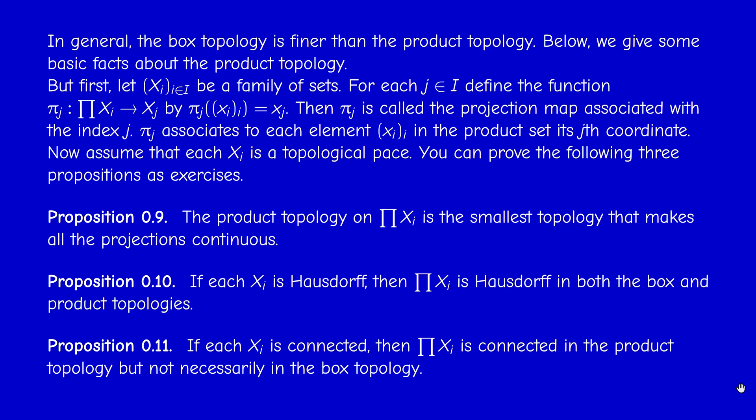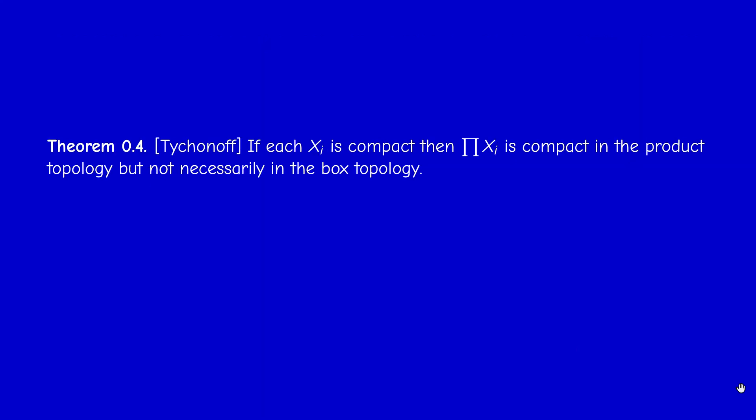When the collection is finite the two topologies coincide. And now we have a deep theorem due to Tychonov: if each space is compact, then the product is compact in the product topology, but not necessarily in the box topology. This is a deep theorem. We are not going to prove it in this course but we shall use it later — it is a fundamental theorem. So we now have two reasons to prefer the product topology over the box topology.